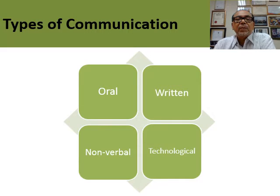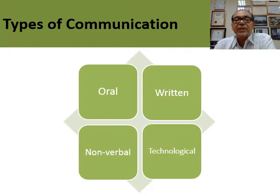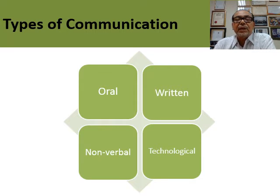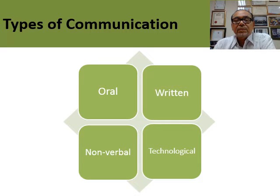Types of communication: you can communicate through oral means — speaking, instructions, just talking. Through writing — now we have email; last time people sent letters. Non-verbal — through body language. And technology — you can send WhatsApp, SMS, and use many applications. But again, the communication must be very clear; short unclear messages cause people to interpret things their own way, and then the goals of communication cannot be achieved.